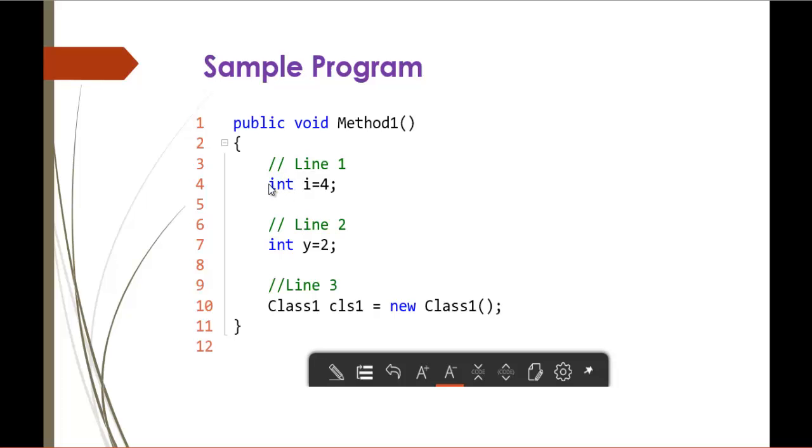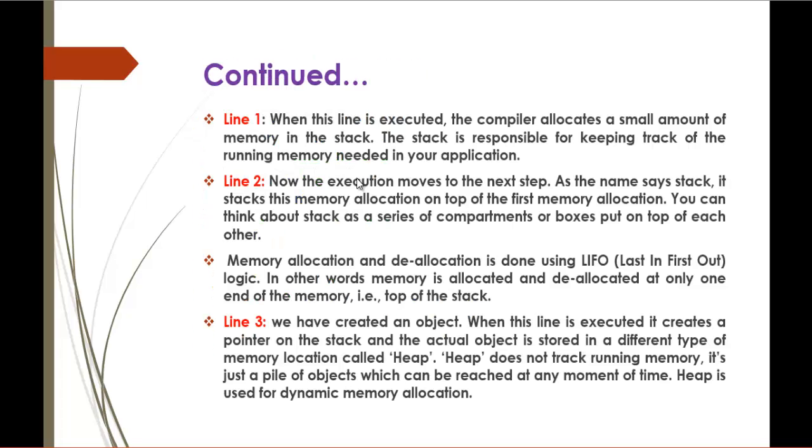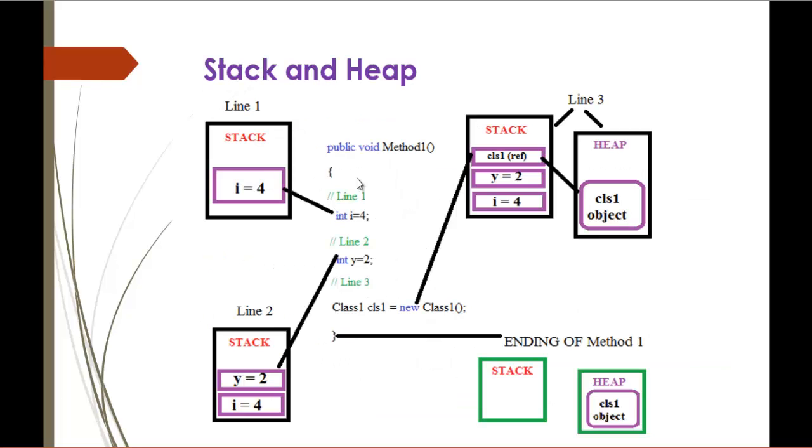Now when we initialize int i equals 4 in this method, what happens? How does the variable store the value and allocate memory in C-Sharp? In line 1, when this line is executed, the compiler allocates a small amount of memory in the stack. Stack is responsible for keeping track of the running memory needed in your application. Keep in mind there are two types of memory: stack and heap. Stack always stores the value data types, i.e. int, float, double values will be stored in the stack.